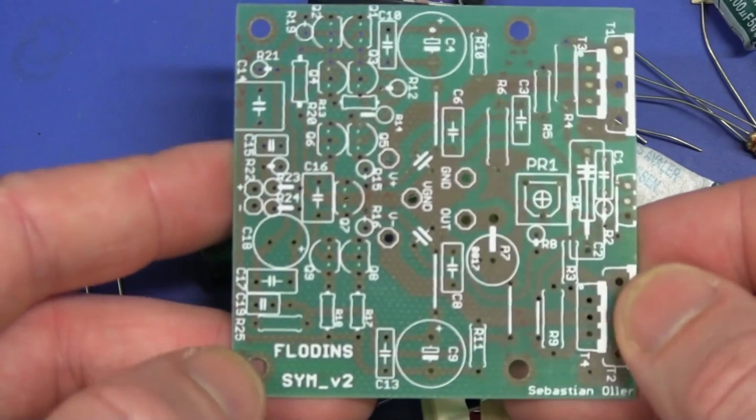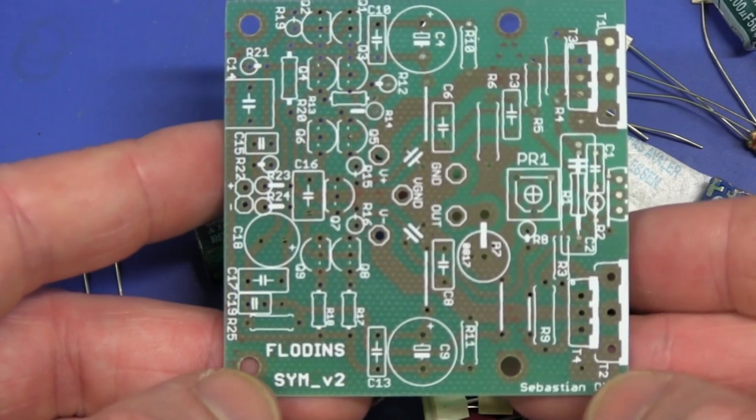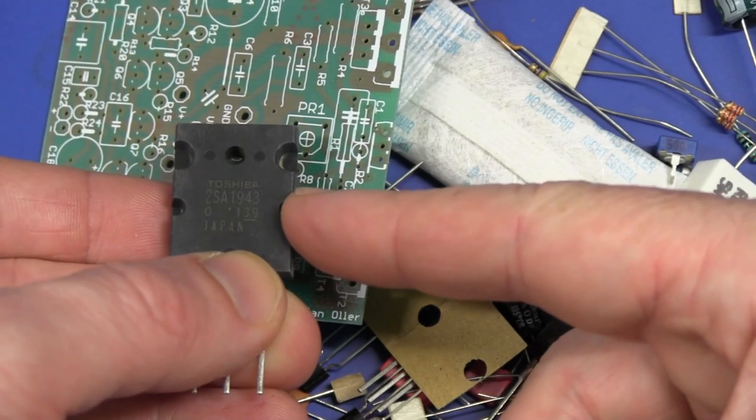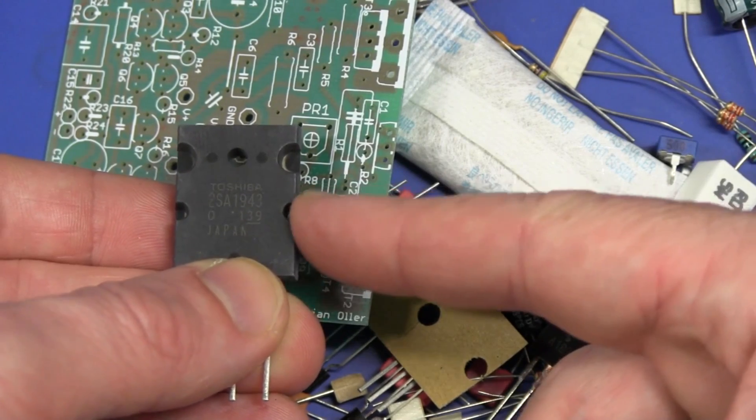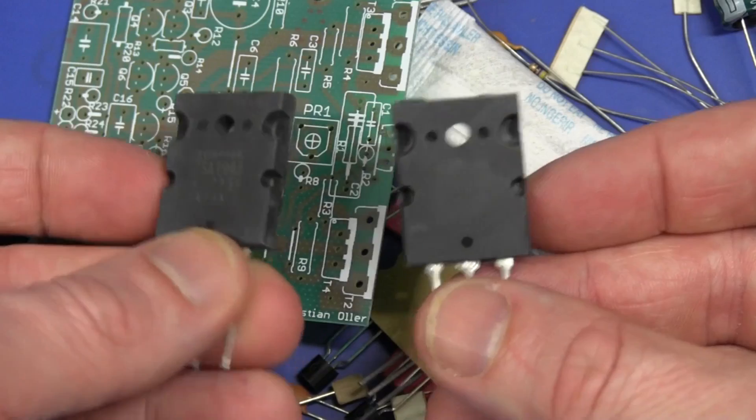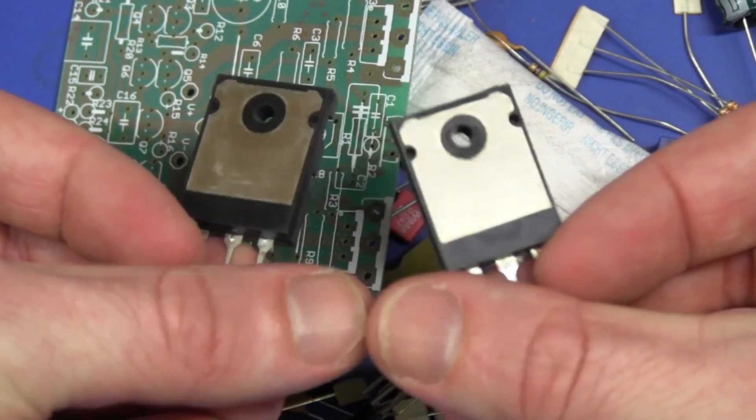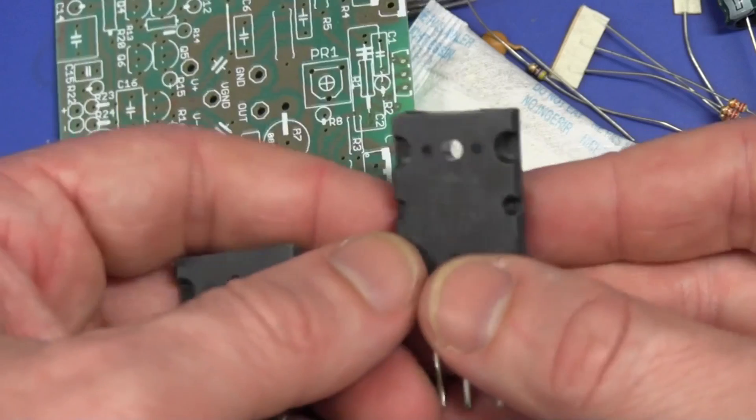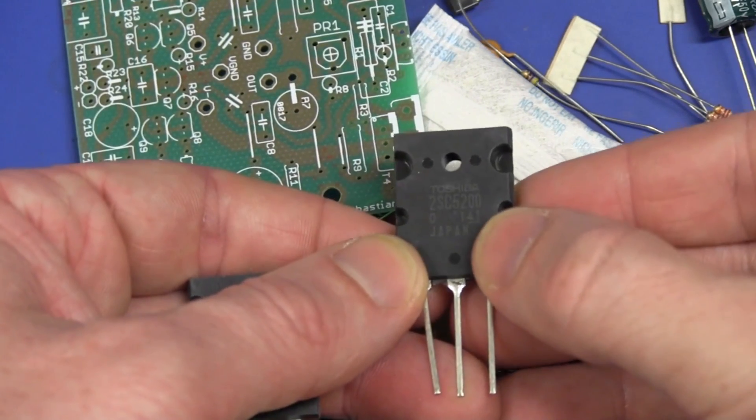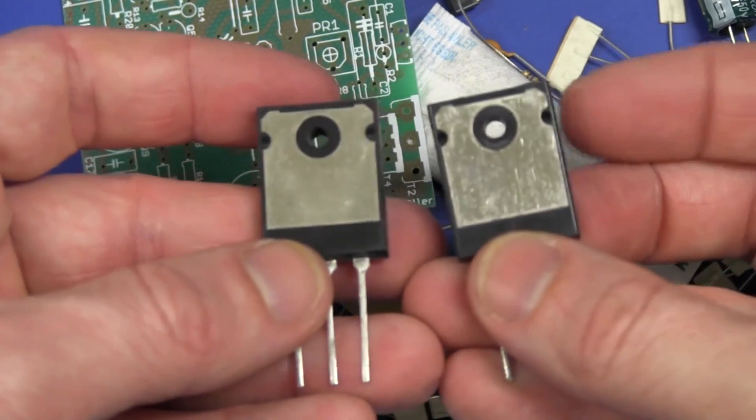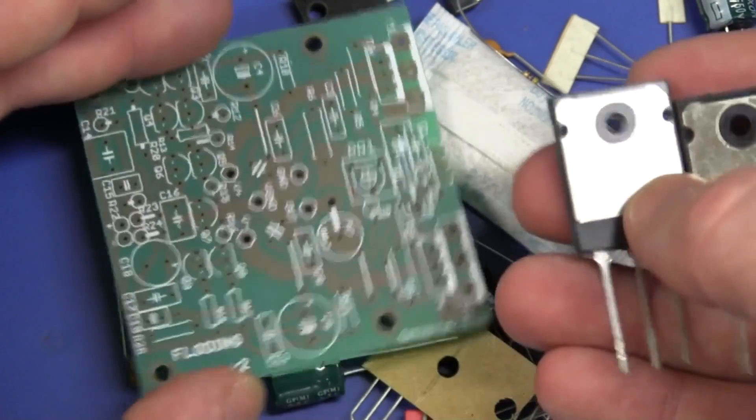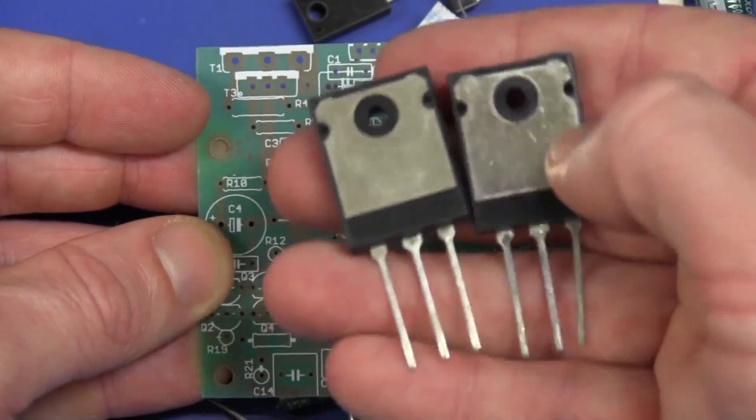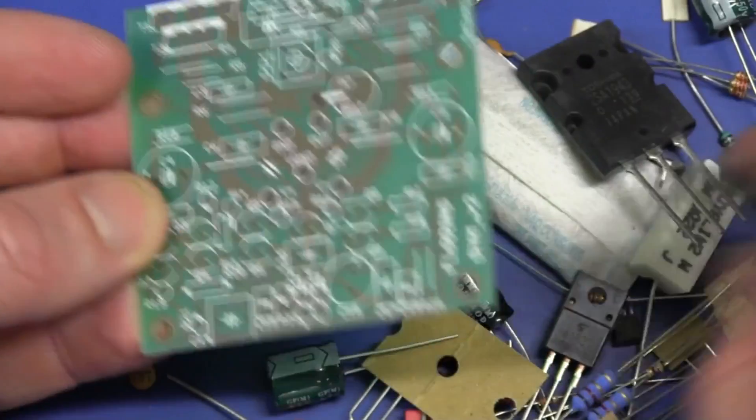And let's have a look at the top. What do we got here? Flodins sim V2 again. Sebastian Olya. And it looks good. And it looks like we've got genuine Toshiba TSA 1943 there. These are, I'm not sure if these exact ones, but a lot of these very expensive high power transistors are often faked. So you've got to be careful that you actually get the genuine ones. And this one here is a TSC 5200. And they're in huge monster packages. You would, if you're going to get a hundred watts out of this thing, you would really have to make sure that you put these on a decent heat sink and get a decent thermal transfer through to your heat sink.